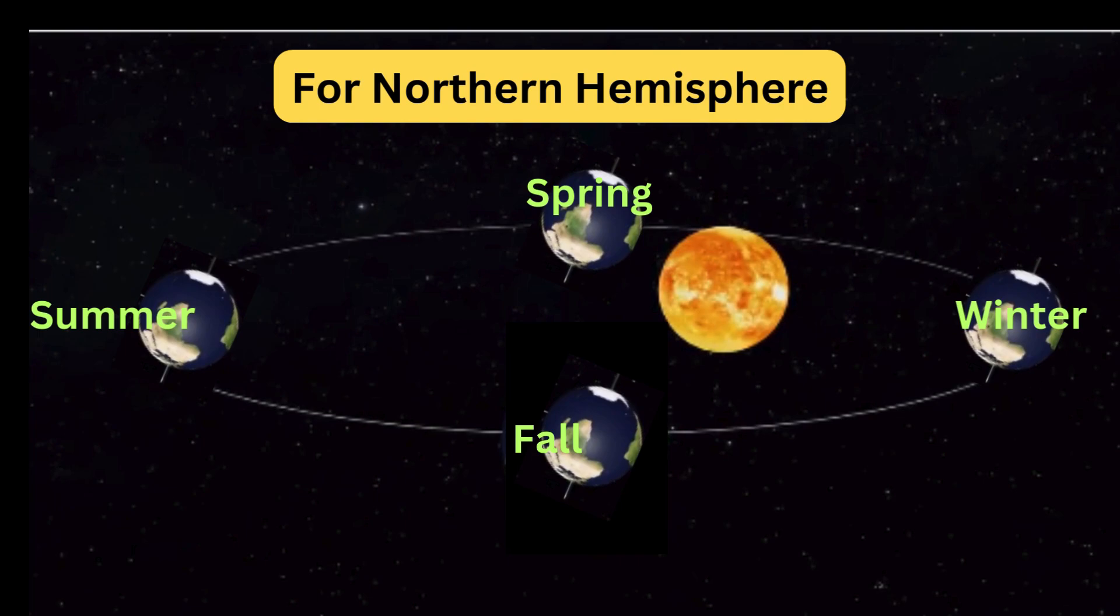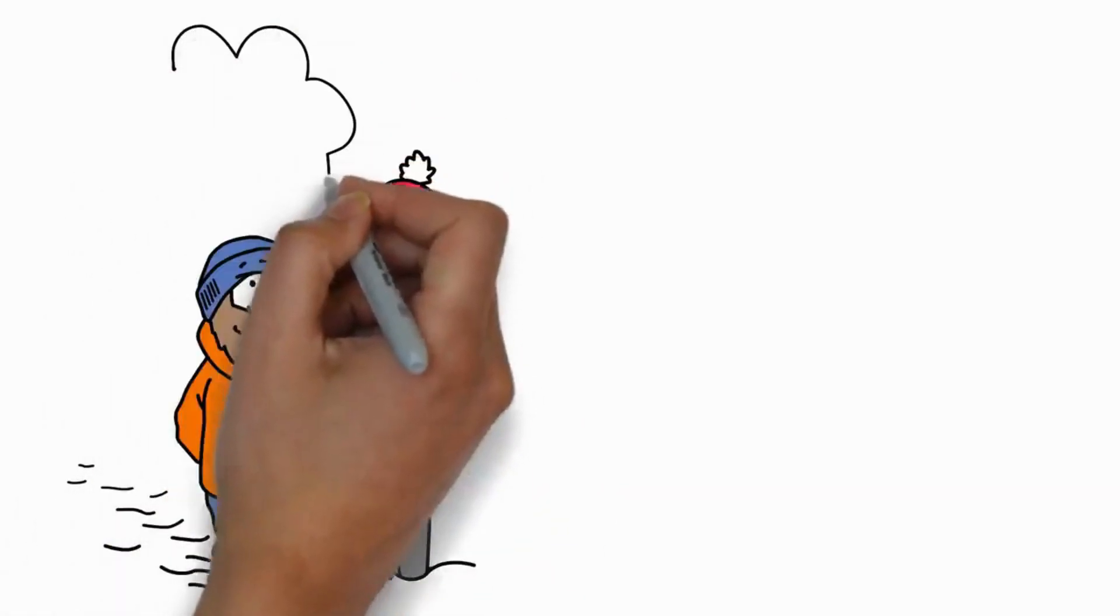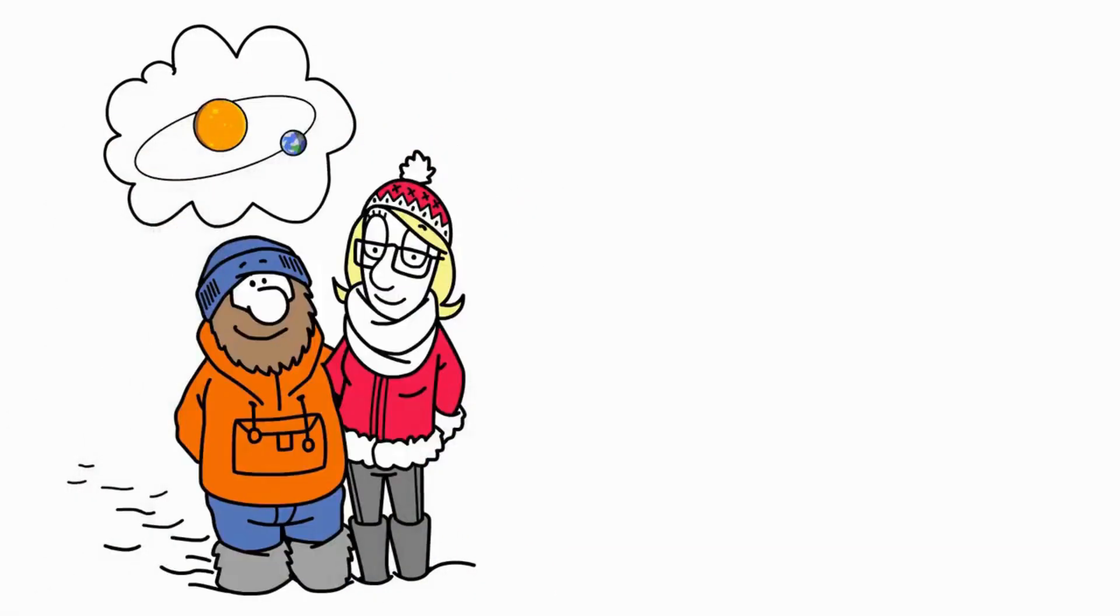In fact, Earth is actually closer to the sun in winter than in summer. So the next time you bundle up for winter or enjoy a sunny summer day, you'll know it's all because of Earth's tilt and its journey around the sun.